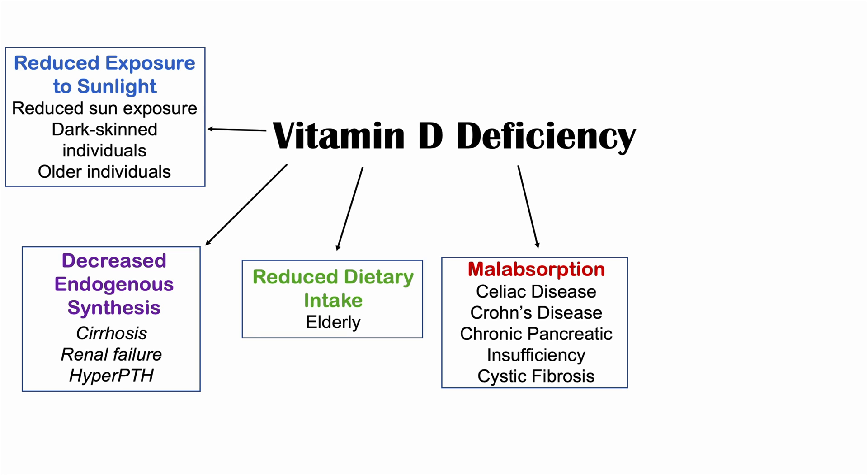With Crohn's disease, the terminal ileum is often affected — that is the place where we absorb fat-soluble vitamins. Chronic pancreatic insufficiency is a cause because patients can't produce pancreatic enzymes like lipase to break down fats and access vitamin D. Cystic fibrosis leads to deficiency for a similar reason.